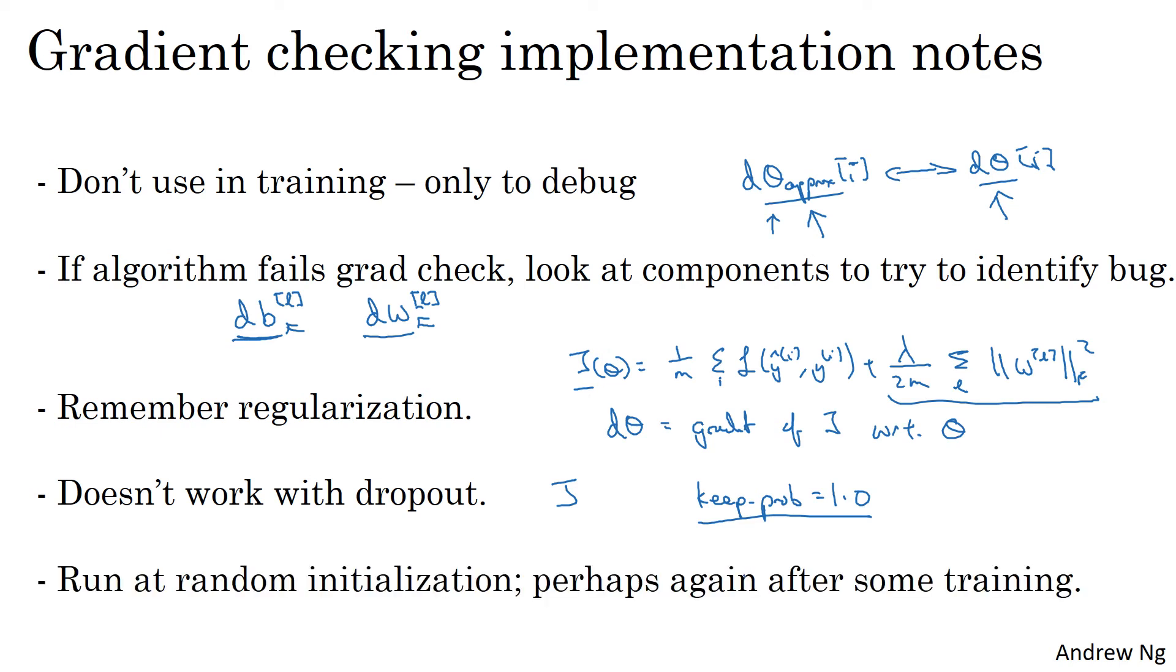Finally, this is a subtlety. It is not impossible, rarely happens, but it's not impossible that your implementation of gradient descent is correct when w and b are close to zero, so at random initialization. But that as you run gradient descent and w and b become bigger, maybe your implementation of backprop is correct only when w and b is close to zero, but it gets more inaccurate when w and b become large.